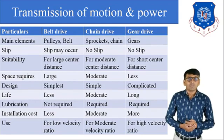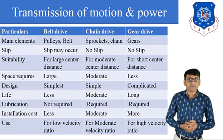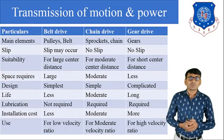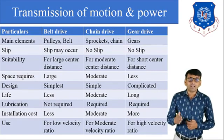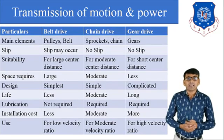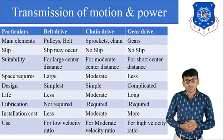Next topic — life: belt drive has less life, chain drive has moderate life, and gear drive has long life. Then lubrication: lubrication is not required in belt drive; lubrication is required in chain drive and also required in gear drive.